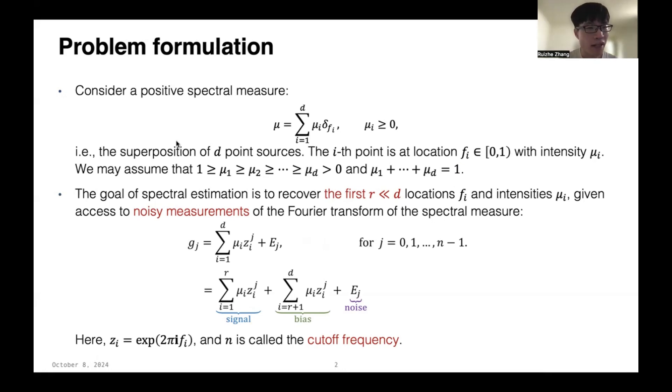The second part is the bias part, and the third part, e_j, is the noise part. Here, note that the index j is from 0, 1 to n-1, and n is called the cutoff frequency, which is an important parameter for the spectral estimation problem, and we want to minimize the cutoff frequency.